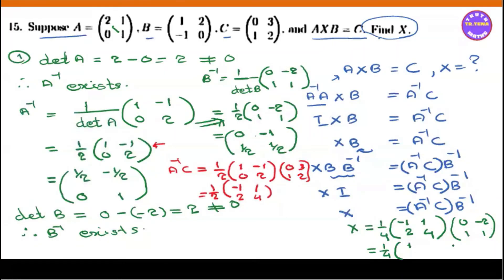First row, second column: minus one, minus two, one. Two, one, one. One three. Second row, first column: two, zero, zero — gives four, one, four. Second row, second column: two, minus two, one — gives minus four. Now minus four plus four equals zero. So seven minus two gives one, minus two.